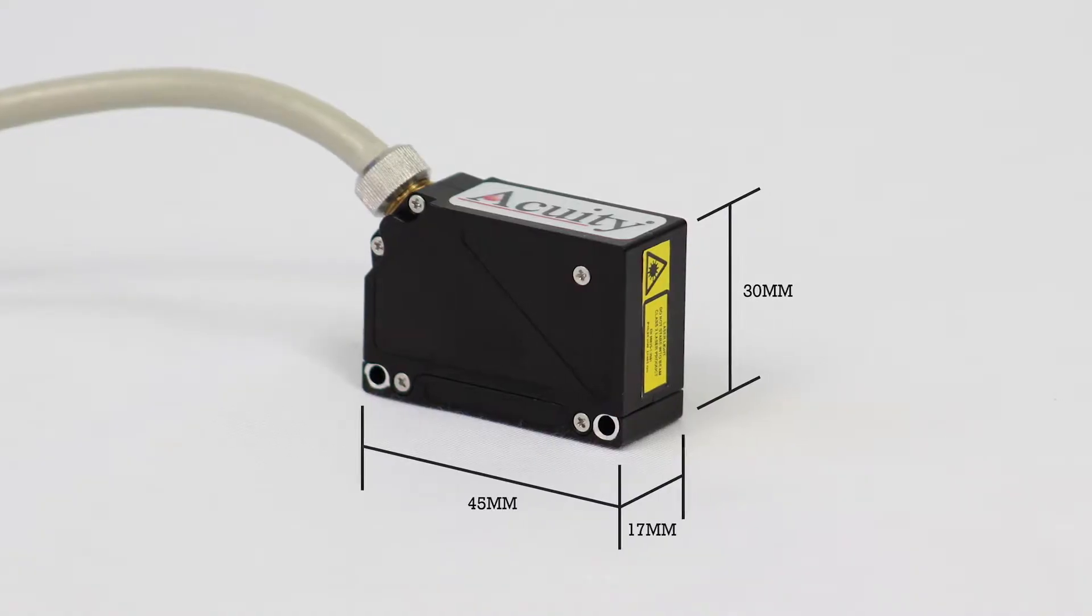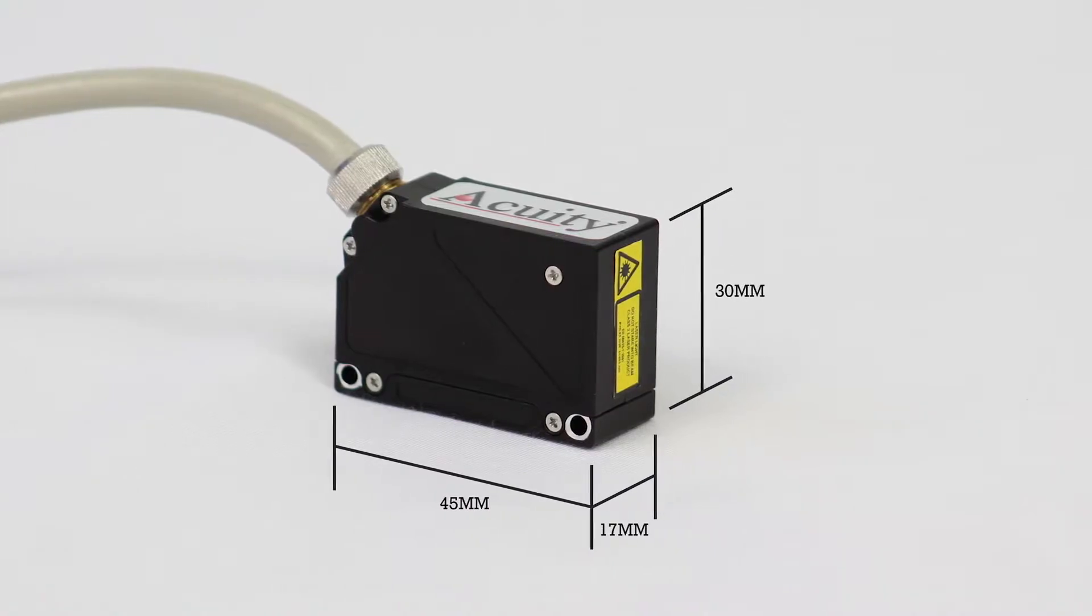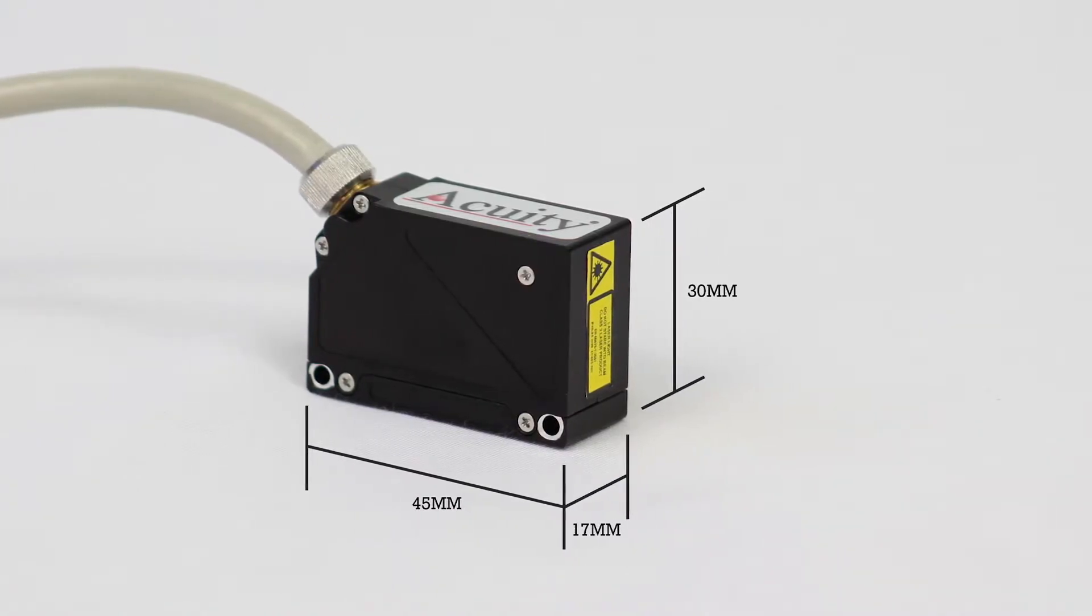The AR100 is one of the smallest triangulation lasers in the world. Its body measures just 45 millimeters by 30 millimeters by 17 millimeters. It fits literally in the palm of your hand.